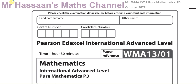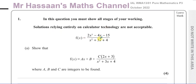The first question on this paper is about an improper fraction. It says you must show all stages of your working — solutions relying entirely on calculated technology are not acceptable. That's mainly for part B, which is about integration. It asks you to show that f(x) equals 2x cubed minus 4x minus 15 over x squared plus 3x plus 4 splits up into a given form. So here we have an improper fraction.